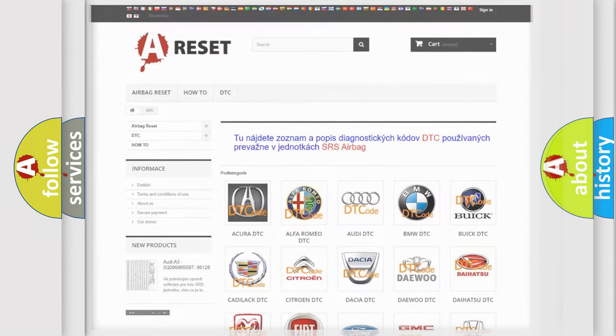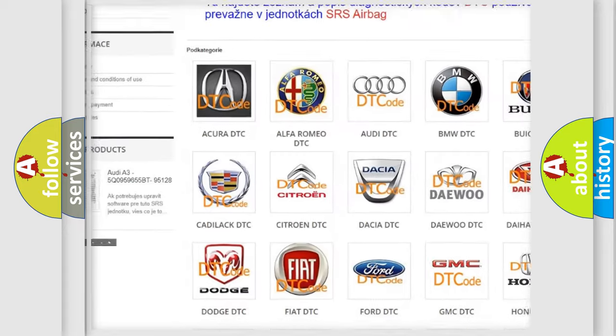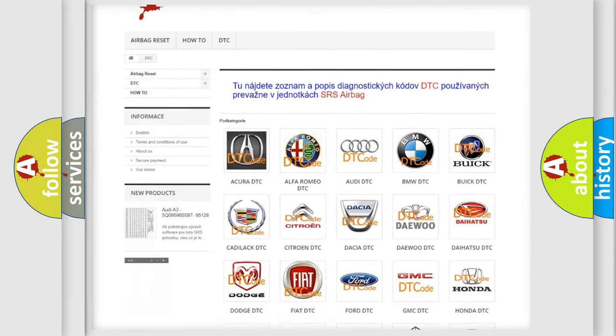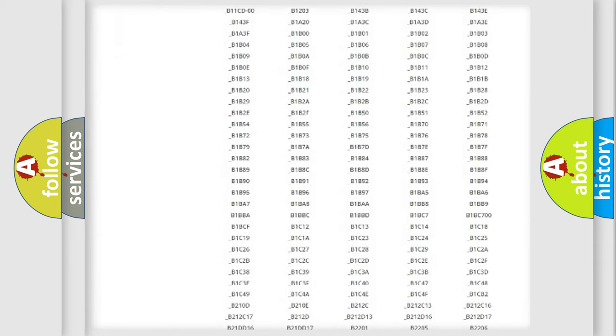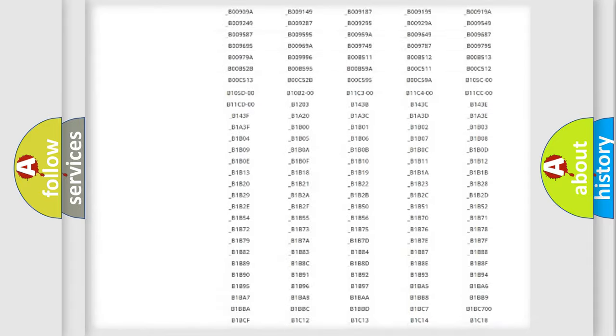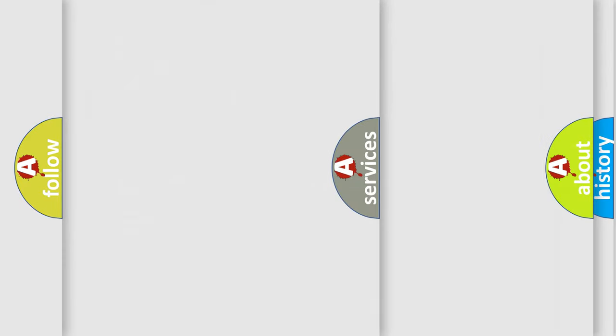Our website airbagreset.sk produces useful videos for you. You do not have to go through the OBD2 protocol anymore to know how to troubleshoot any car breakdown. You will find all the diagnostic codes that can be diagnosed in Dodge vehicles, plus many other useful things.